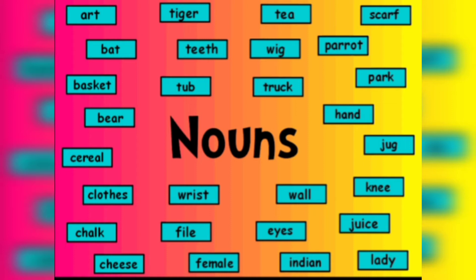Nouns are the words which are used to identify any of a class of people, place or thing, or to name a particular one of any of these types. For example, as you can see on the screen: tea, tiger, tub, truck — these all are nouns.